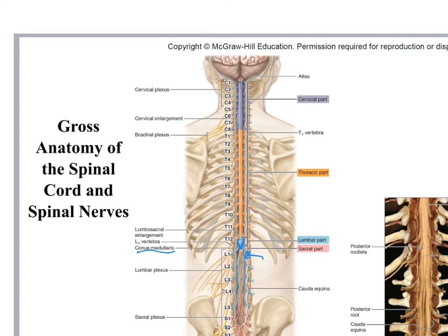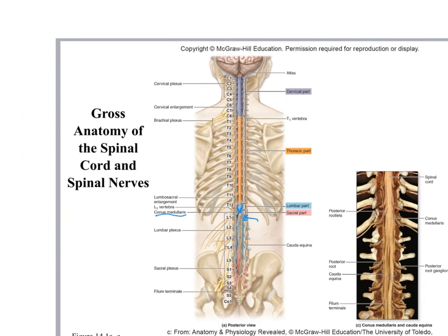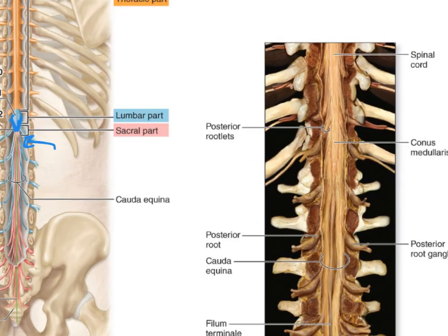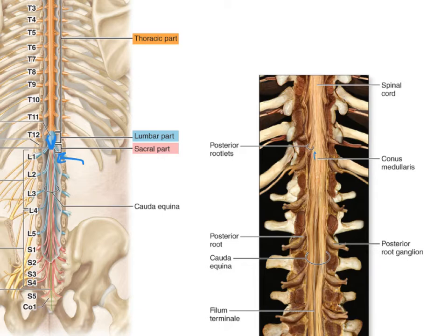Certain spinal nerves extend down through the lumbar and sacral vertebrae. Inside the vertebral column they are called the cauda equina — cauda means tail, equina means horse. You can see the conus medullaris ending and then the nerves extending further down, looking like a horse's tail.